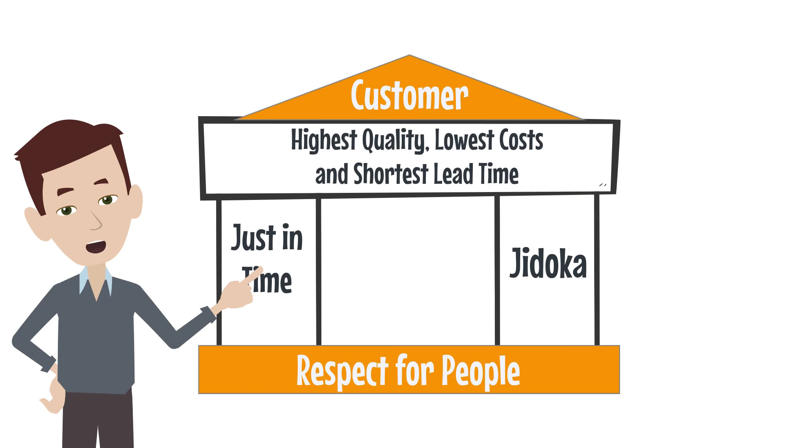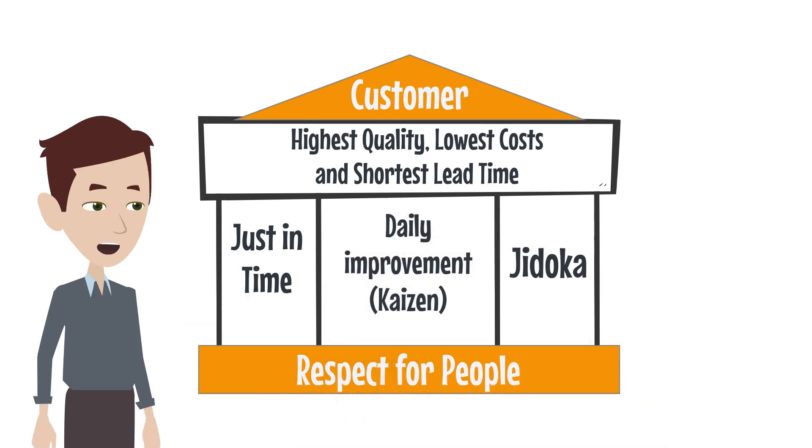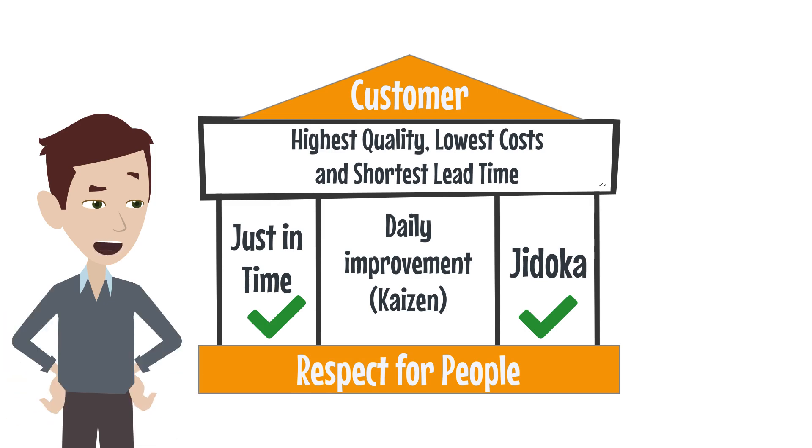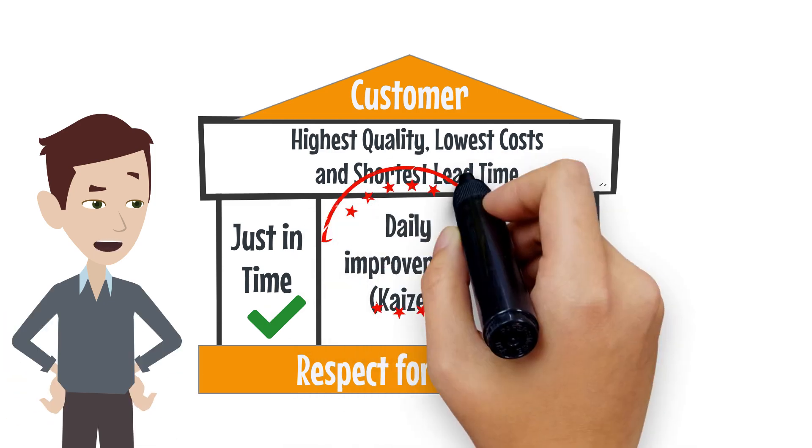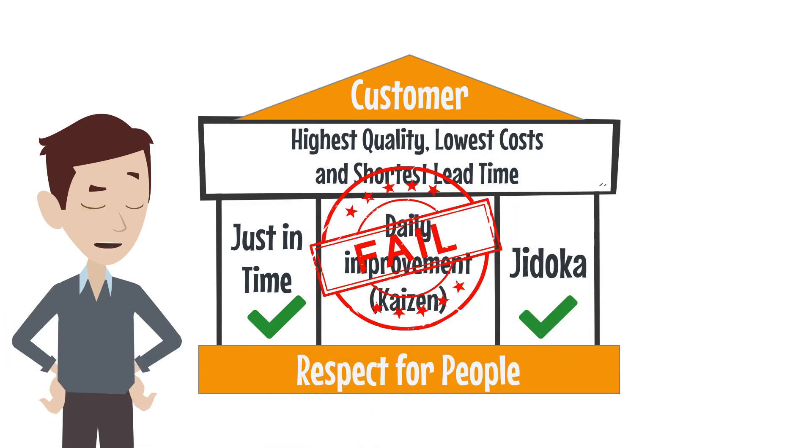Let's take a closer look at the Toyota Production House again. Daily Improvement or Kaizen is one of the central elements in addition to Toyota's methods and approaches. The customer is at the top of the house. While the implementation of lean methods has led to a noticeable improvement in the lighthouse projects, only a few of them have successfully developed a focus on daily improvement.